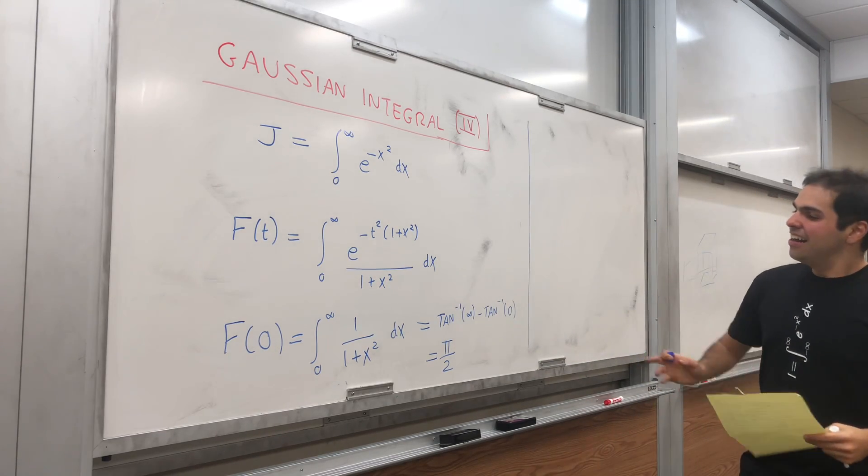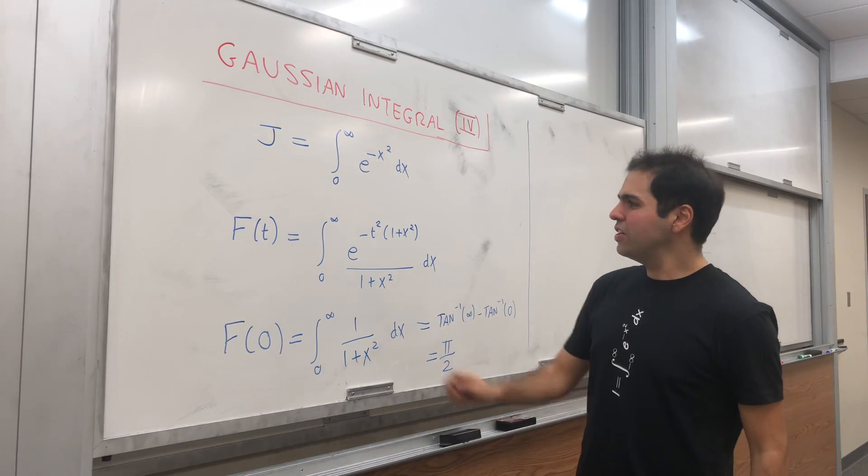So on the one hand, f of zero is pi over two. On the other hand, if you plug in t equals to infinity,